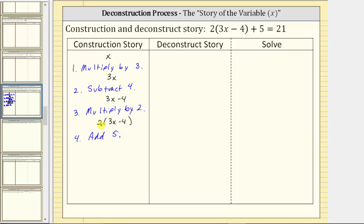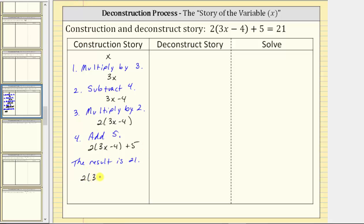So if we add five to this product, we have the left side of the equation, which is two times the quantity three x minus four plus five, equals twenty-one. Which gives us our complete equation: two times the quantity three x minus four plus five equals twenty-one.